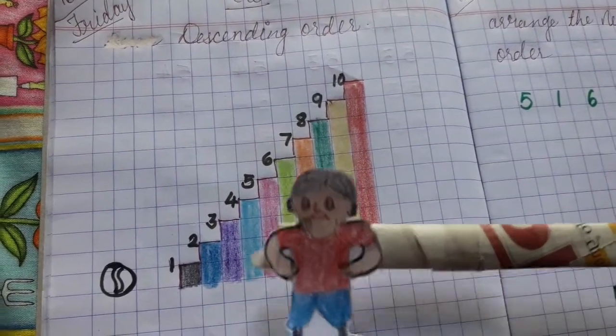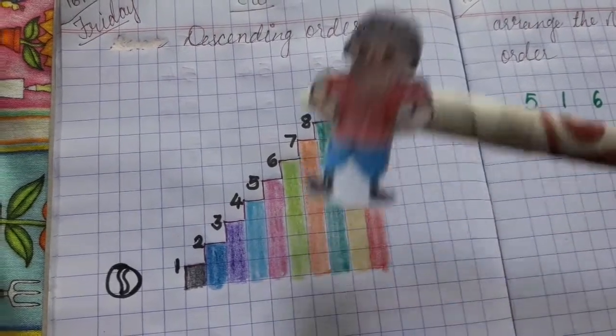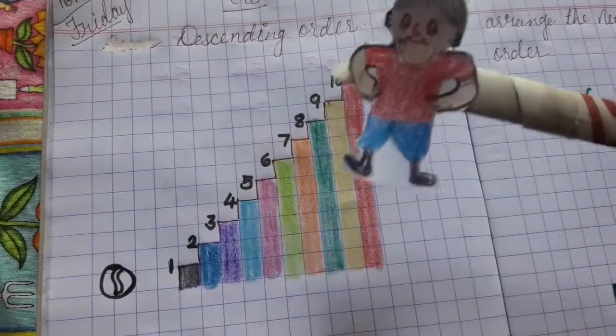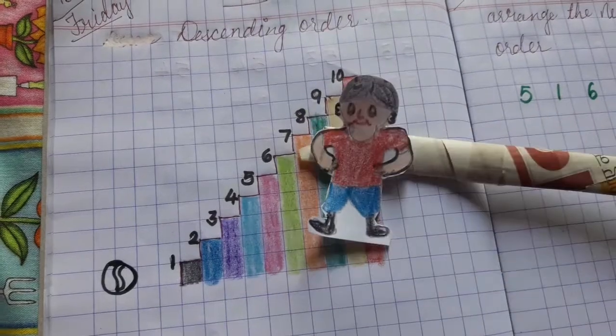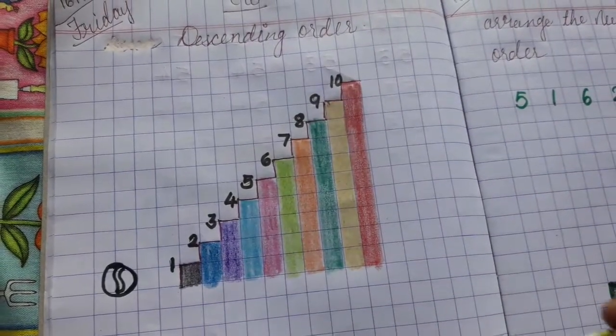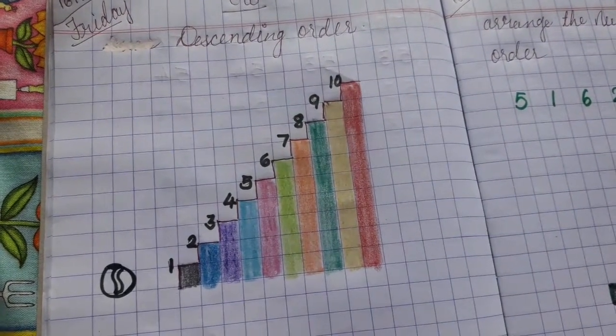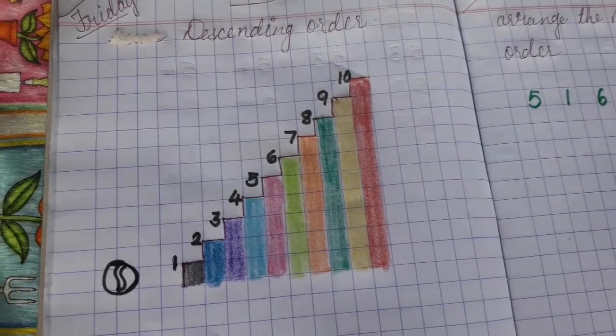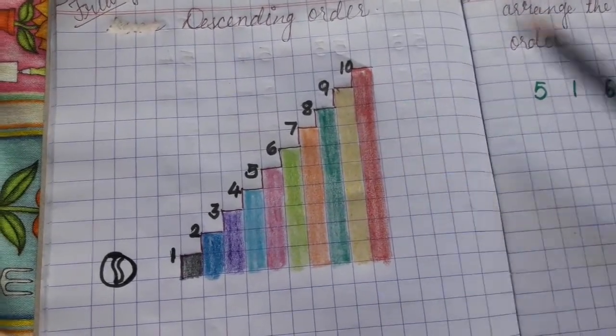It means he moves in descending order. Descending order means big number to small number. Okay.